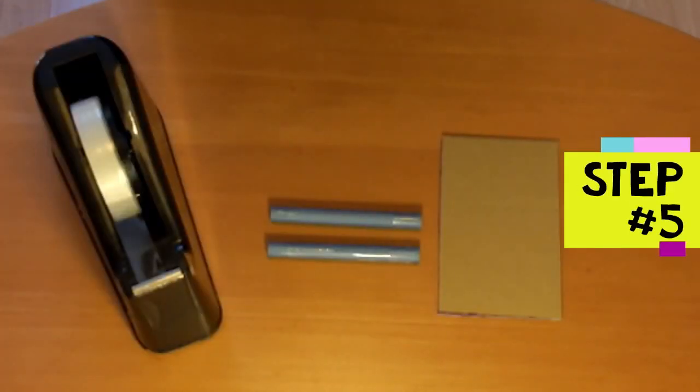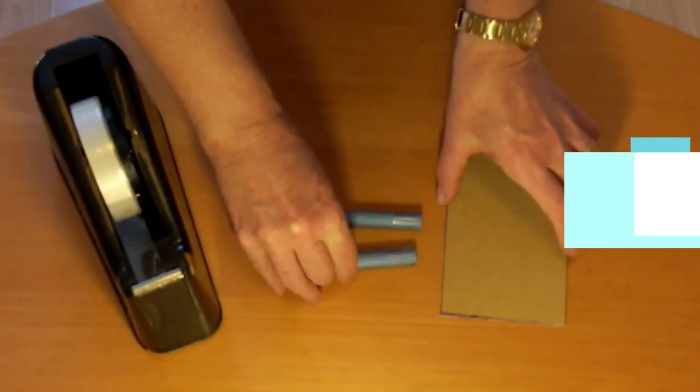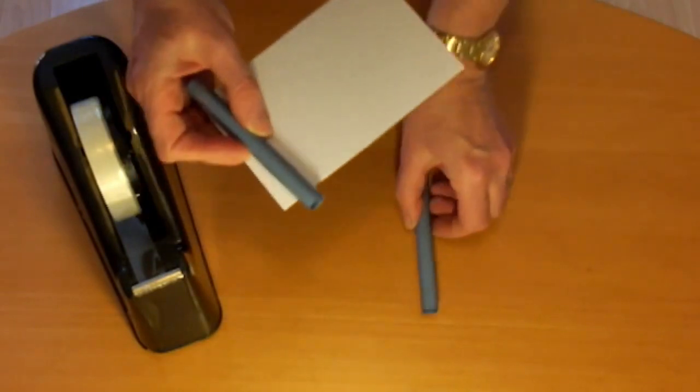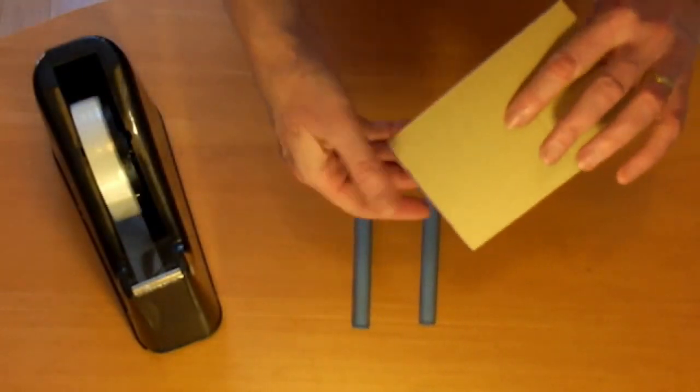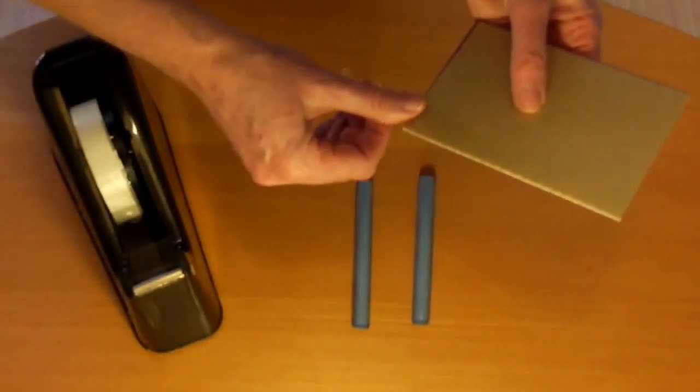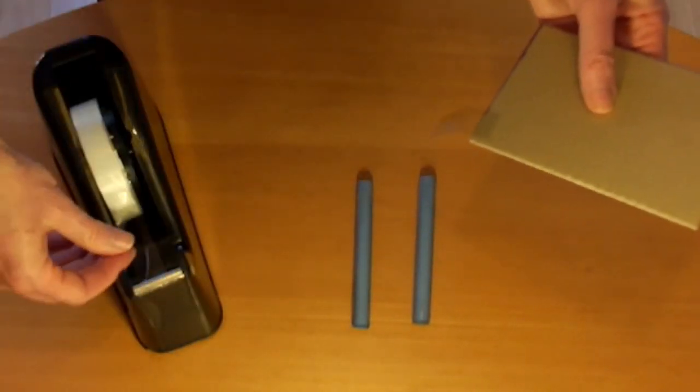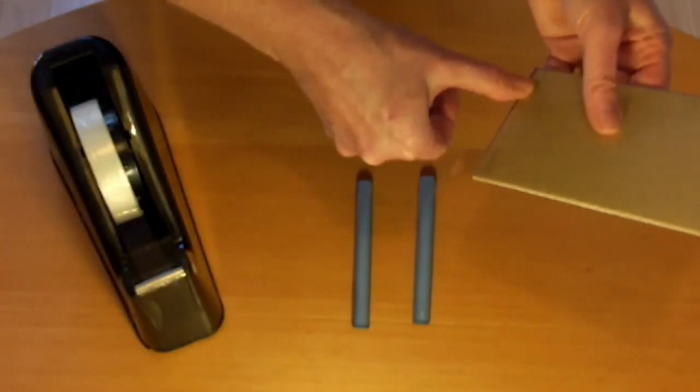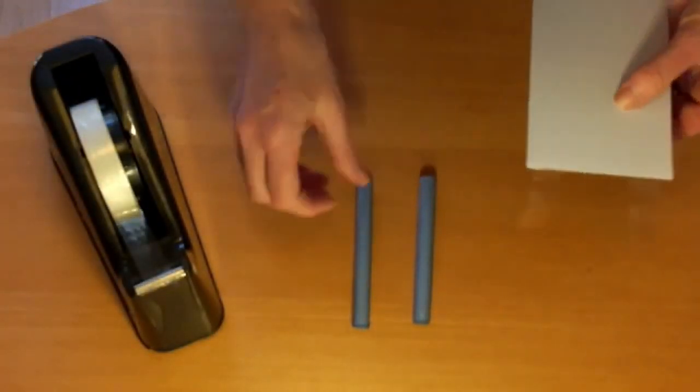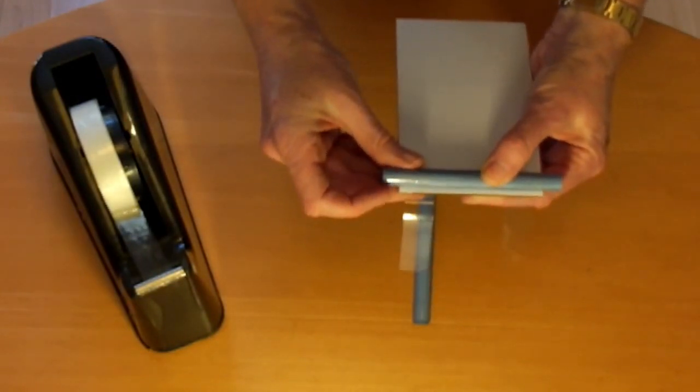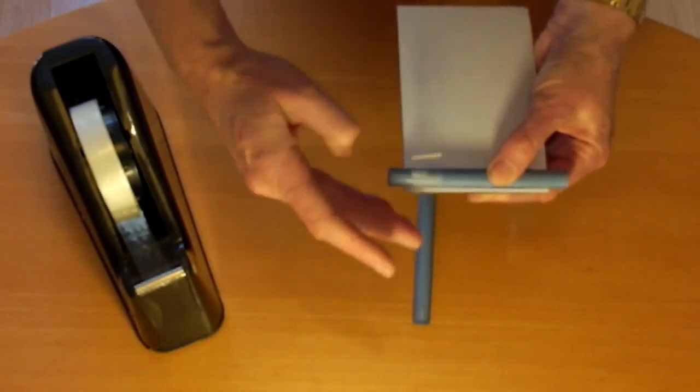Step five is to attach the bearings. You're going to tape each bearing to the bottom of the base. Be careful not to crush the bearing while you're taping it on. Make sure it sticks out quite evenly either side.